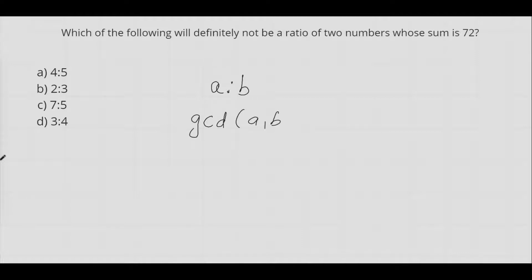gcd stands for greatest common divisor which is also known as hcf, highest common factor. So let's assume that we have taken a ratio in a is to b form.